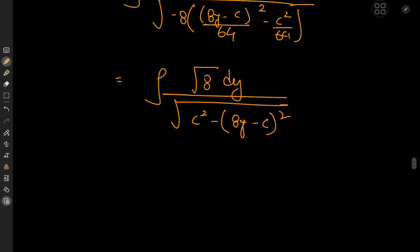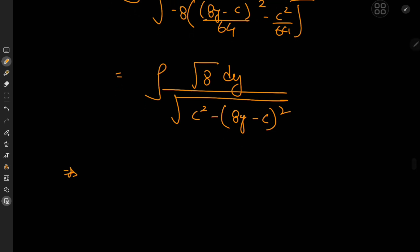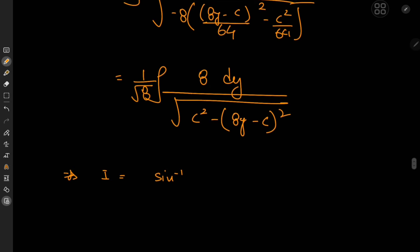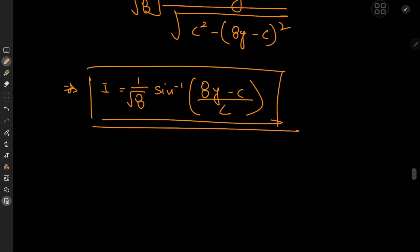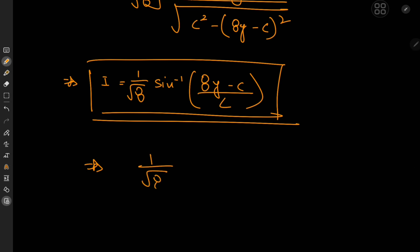The structure gives us an inverse sine. After simplifying, taking care of the differential element by factoring out 1/√8, the integral evaluates to (1/√8) times the inverse sine of (8y minus c)/c. This is equal to x plus the constant a.